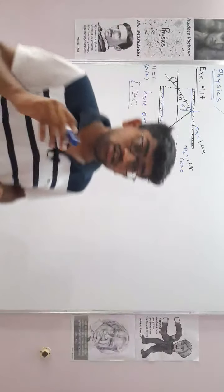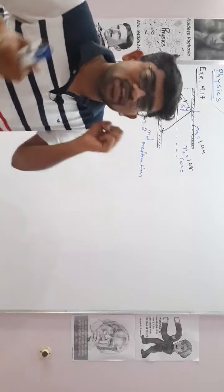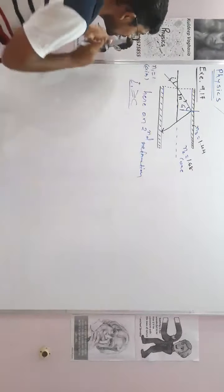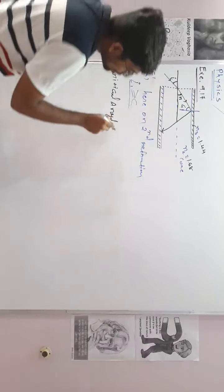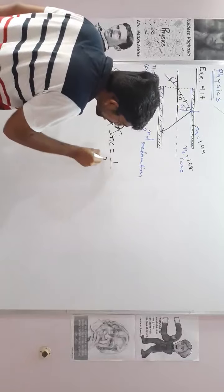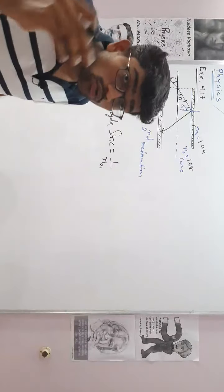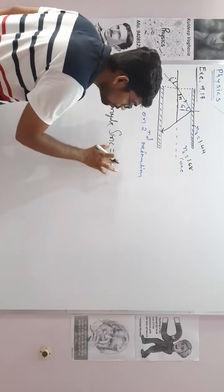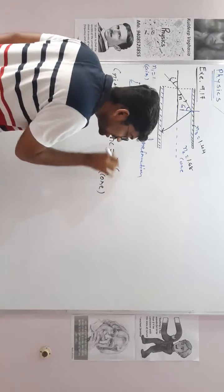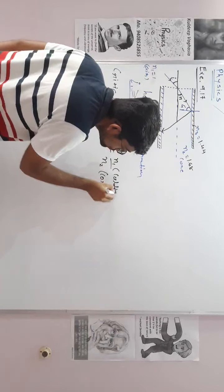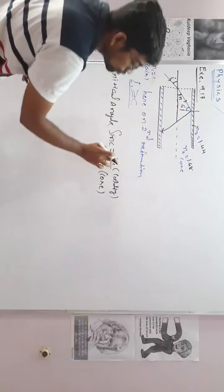Total internal reflection occurs when the incident angle is greater than the critical angle. To find the critical angle, we use the equation: sin C = n3/n2 — that is, the refractive index of the rare medium (cladding) divided by that of the denser medium (core). Here N2 is the core part index and N3 is the cladding part index. This is the tricky point where mistakes often happen.